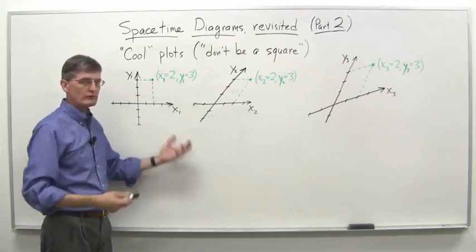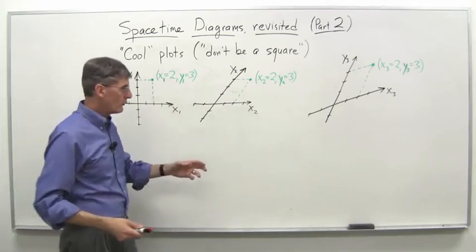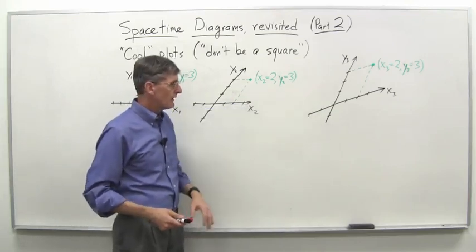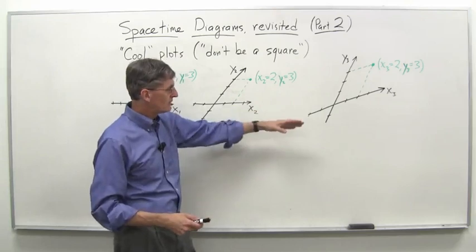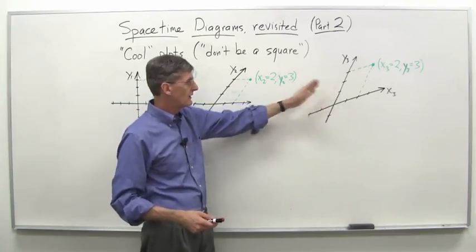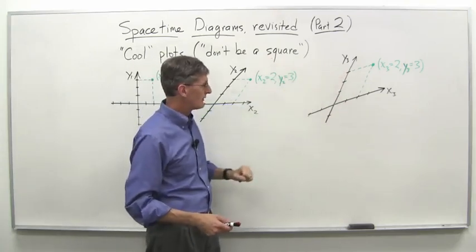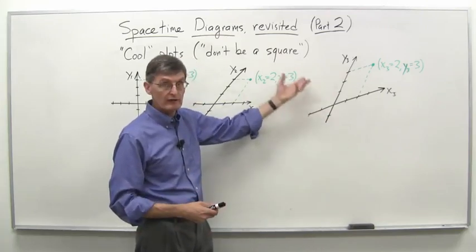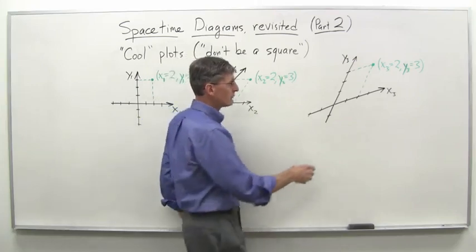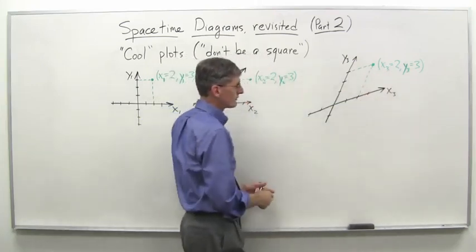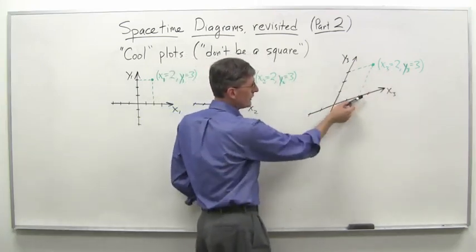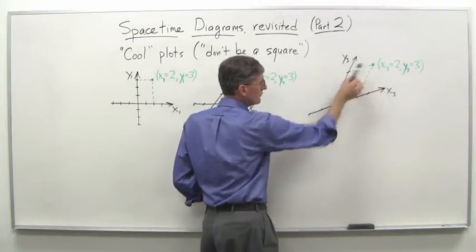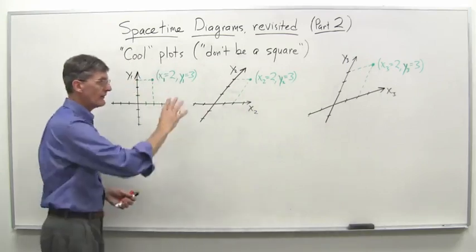We could go one step further and get really wild — why not put the x-axis at an angle as well? That's what we've done in our third example, where we've tilted up the x-axis at some angle, and the y-axis at some angle as well. With x3 and y3 axes, for the point x3 equals 2, y3 equals 3, we go 2 on the x3 axis, then parallel to the y-axis up 1, 2, 3. That's where the point is on that plot.